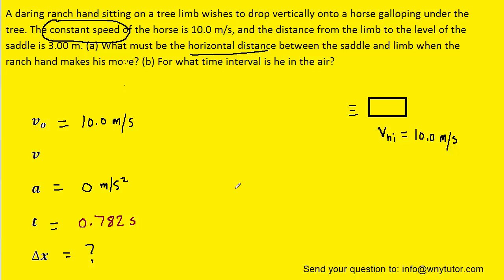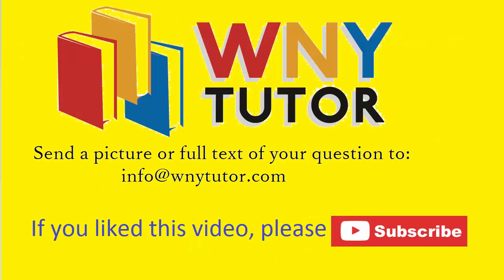We'll use the same equation of kinematics that we used in part b. Since the acceleration of the horse is 0 we can confidently eliminate this term. And then we'll simply plug in the known values for the initial velocity as well as the time. And we can see that the displacement of the horse would equal 7.82 meters. So that would be the distance the horse travels in order to reach the ranch hand.